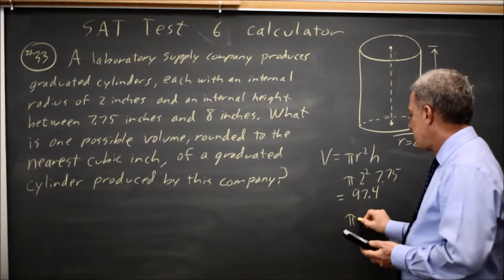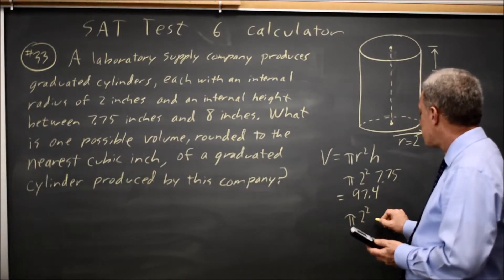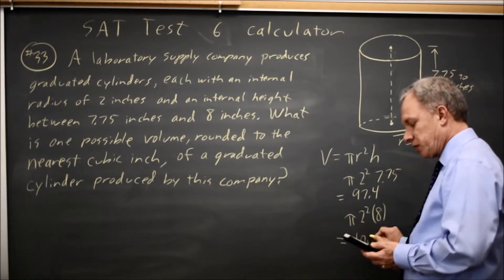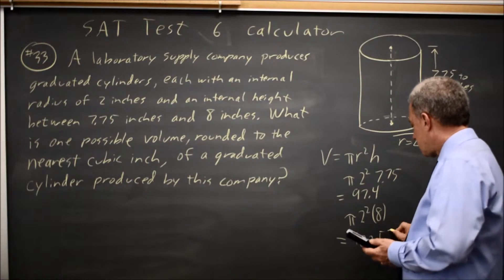And if I try pi times R is 2 squared, times 8 for the taller cylinders, that gives me 100.53.